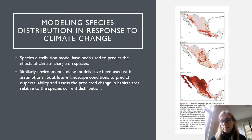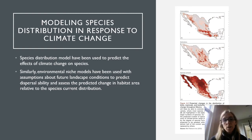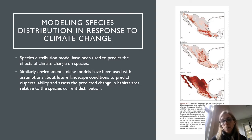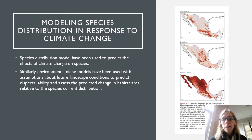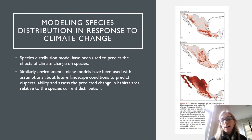Modeling species distributions in response to climate change. Figure 8.2 shows a study that projected ranges of the distribution of birds, mammals, and butterflies throughout Mexico. Through a series of extinctions and new invasions, the model predicted species turnover across the country. Figure A shows areas of new colonization, B shows areas where we might anticipate local extinctions, and C shows the cumulative change.